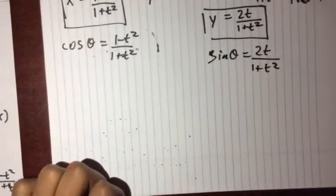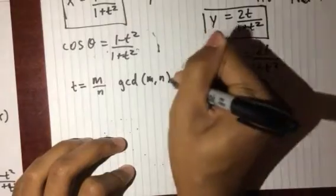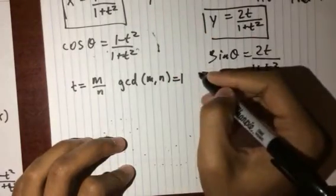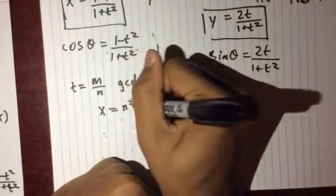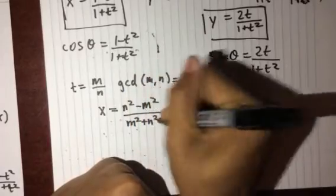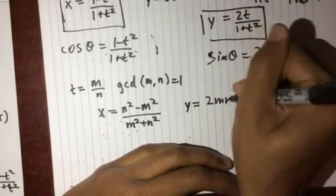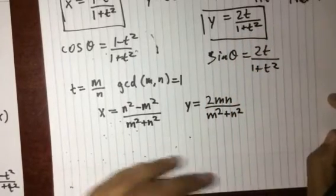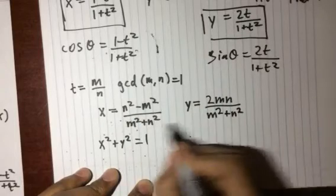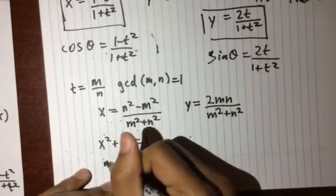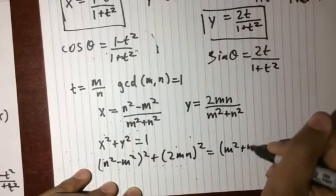And one last thing which I think is super cool: since t is rational you can write it as m over n where gcd of m n equals 1. I might rush this last part because I want this to be around 10 minutes, but if we just plug things in we get x equals n squared minus m squared over m squared plus n squared, and y equals 2mn over m squared plus n squared. And so if you have x squared plus y squared equals 1 you can multiply it through by m squared plus n squared and you get n squared minus m squared squared plus 2mn squared equals m squared plus n squared squared.